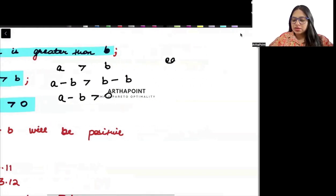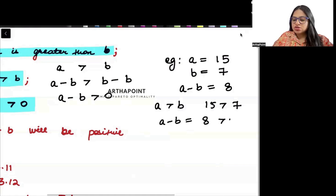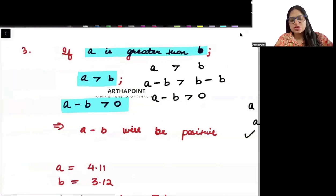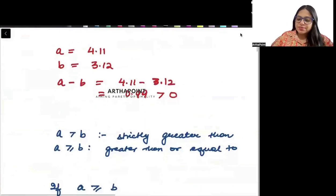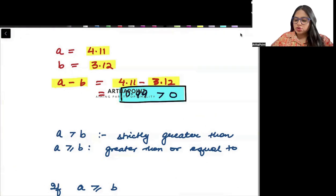Let's take an example. Let a be 15 and b be 7. Then a minus b will be 8. Since a is greater than b — 15 is greater than 7 — a minus b which is 8 is positive, because you are subtracting a bigger number minus a smaller number. Another example: a is 4.11, b is 3.12, so a minus b will be 4.11 minus 3.12 which is 0.99, and this is a positive number.